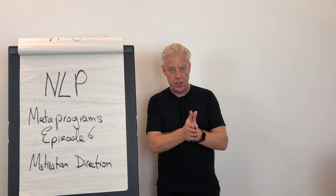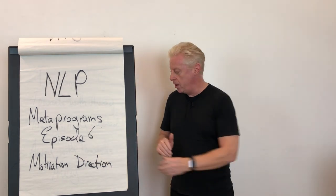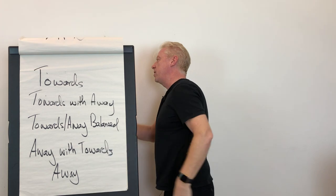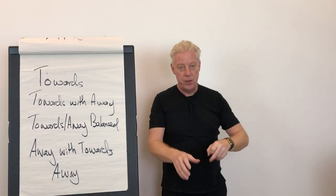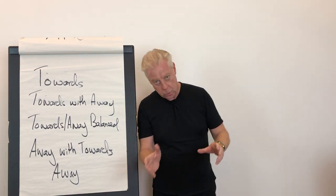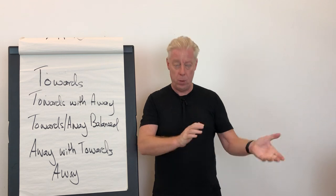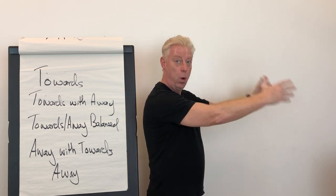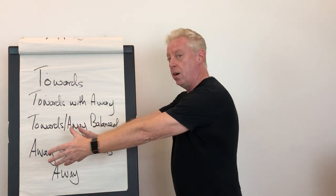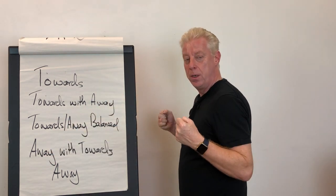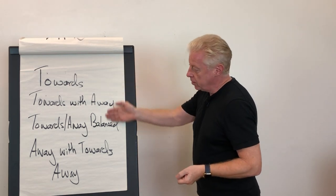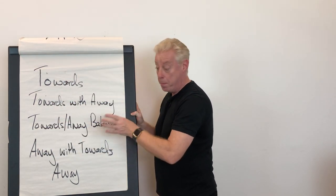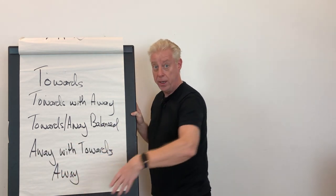Previous metaprograms had more of a sliding scale from one extreme to the other. With this first complex metaprogram, it's similar to a sliding scale but we actually put it into five different categories: totally towards, towards with a little bit of away from, towards-away balanced, away with a little bit of towards, and then totally away from.